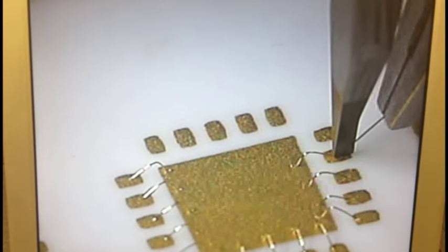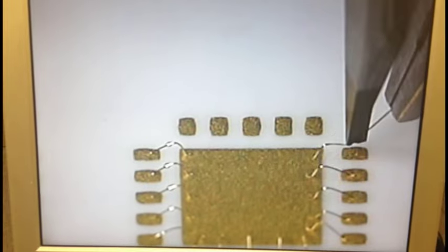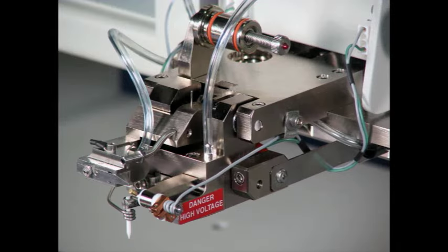The gantry style E-series comes as a dedicated wedge bonder, as you've just seen, a dedicated ball bonder, as well as a wedge bonder and ball bonder combination.